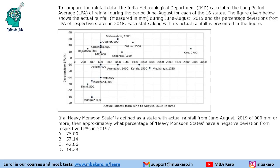Hello everyone, welcome to Aptitude Jab. This set from CAT 2019 Slot 2 DILR is based on a scatter plot. It says that to compare the rainfall data, the India Meteorological Department (IMD) calculated the Long Period Average (LPA) of rainfall during the period June to August for each of the 16 states. The figure shows the actual rainfall measured in mm during June to August 2019 and the percentage deviations from LPA of respective states in 2018. Each state along with its actual rainfall is presented in the figure.